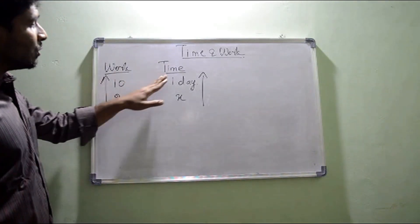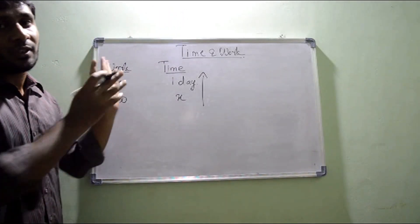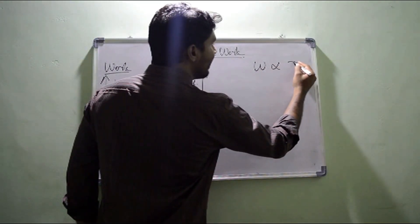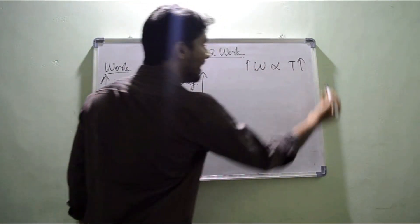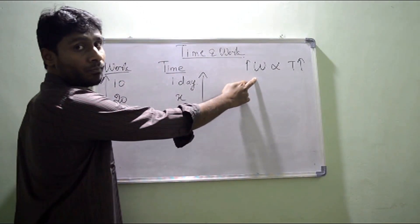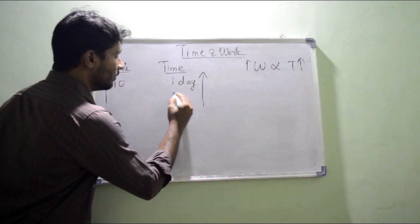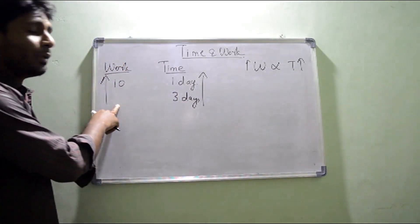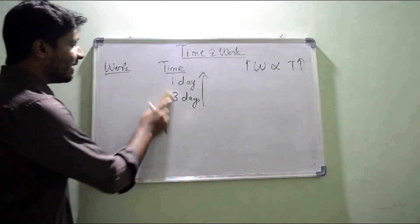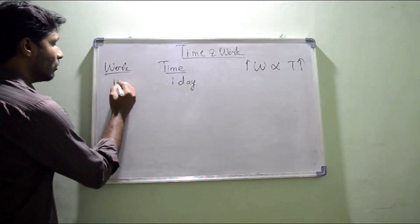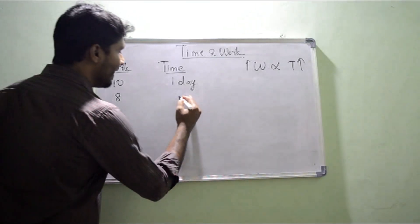So when work increases, time also increases — they are in direct proportion. This is the very first point to keep in mind for this topic. On the vice versa: if I have one day and can do 10 works, and I have three days, I can do 30 works — time increases, work also increases. Similarly, if work decreases from 10 to 8, time also decreases.